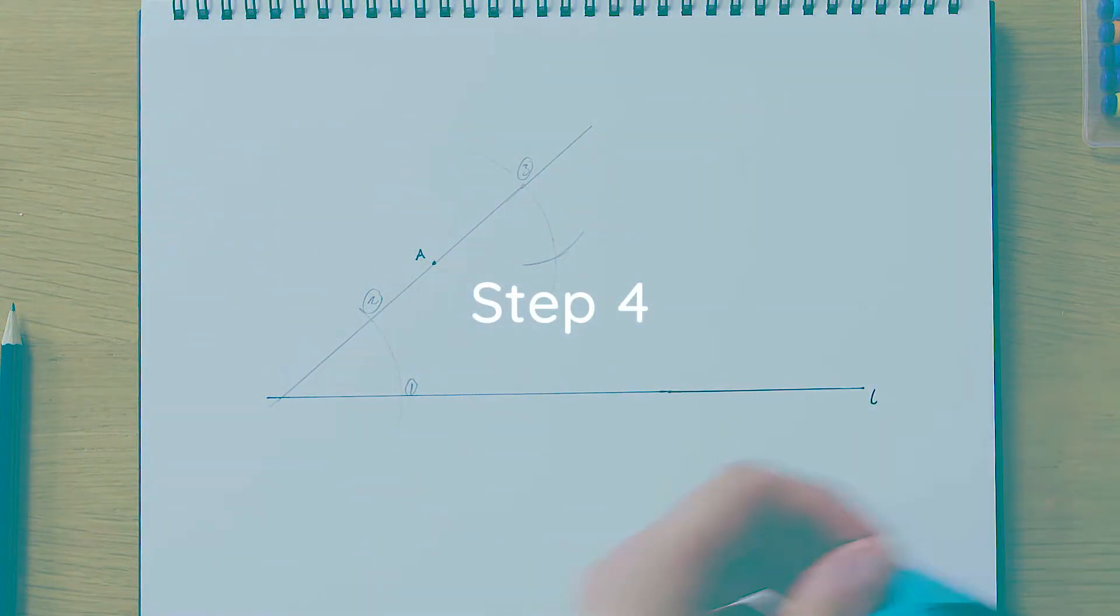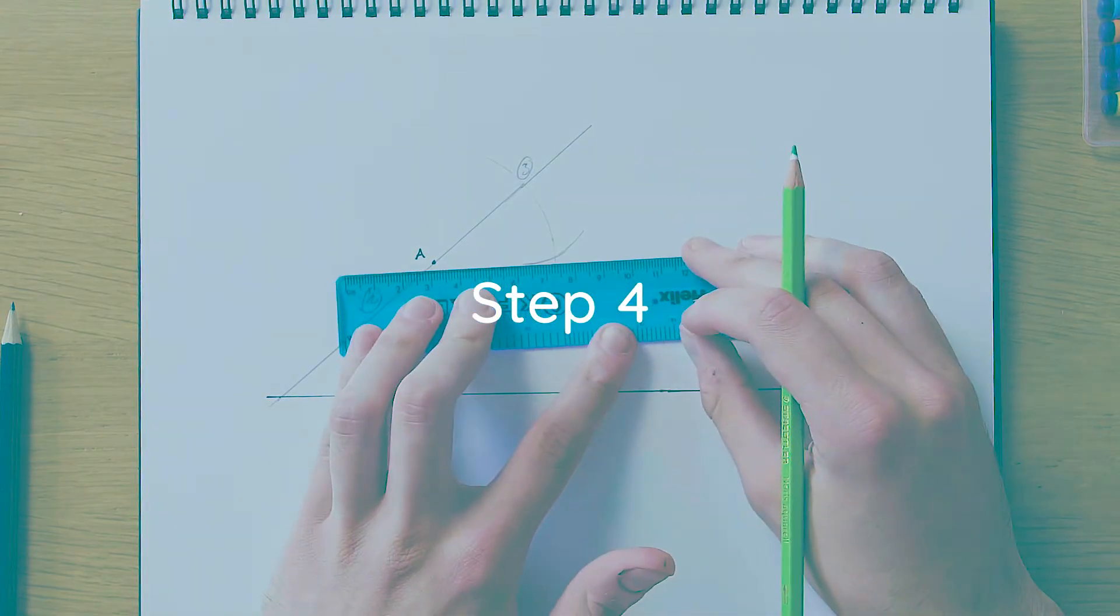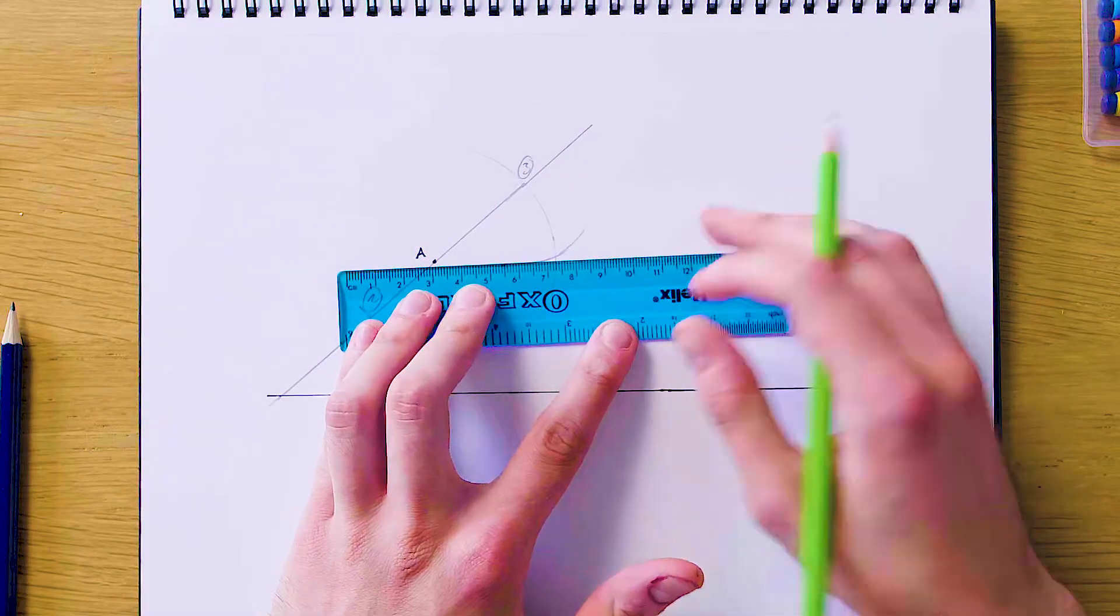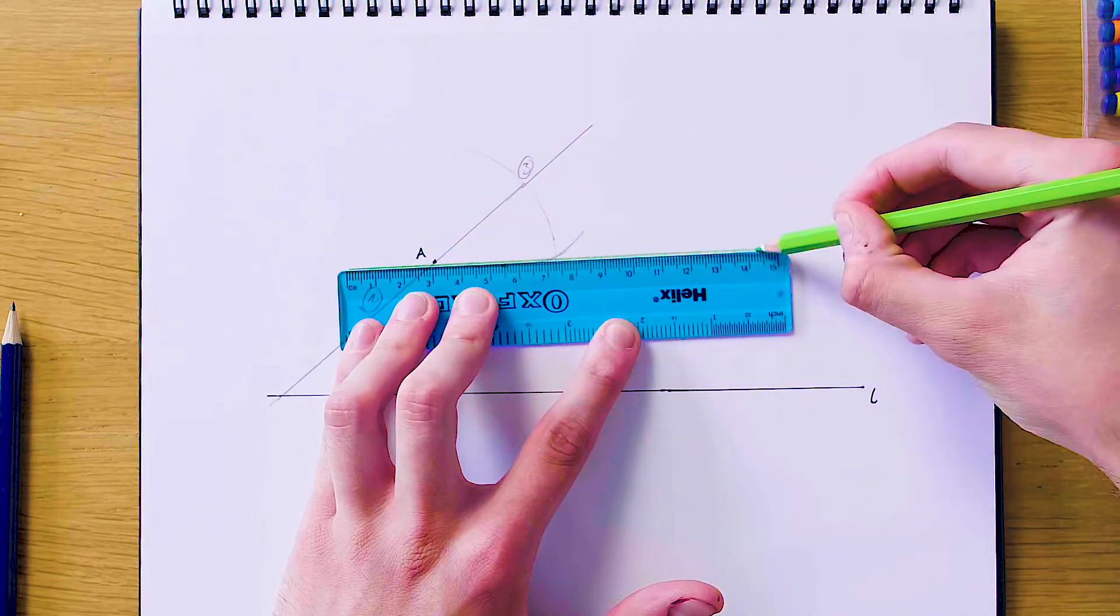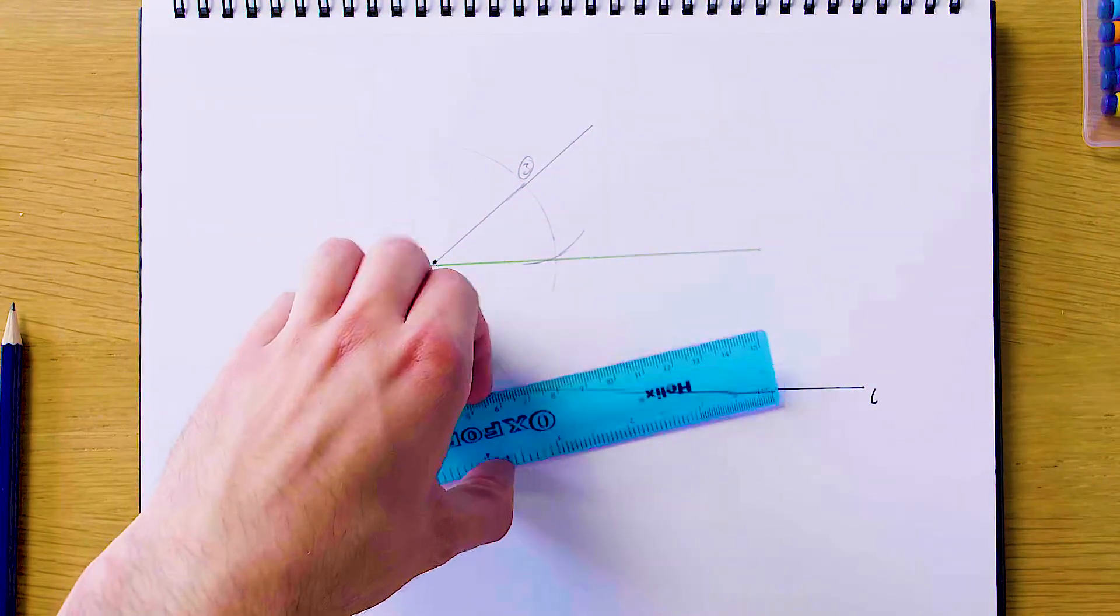And now our fourth and final step is just going to be to connect the point A to this last vertex, and this will give us our parallel line as we want it. So that is it for this construction. I hope you enjoyed the video.